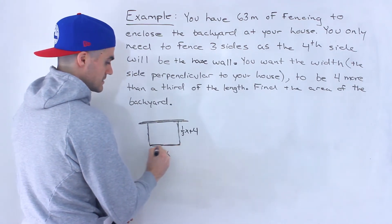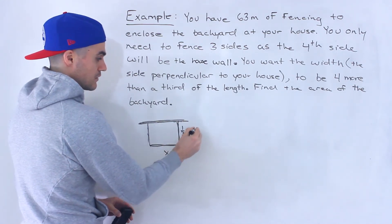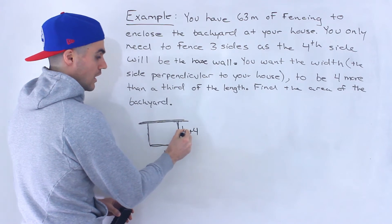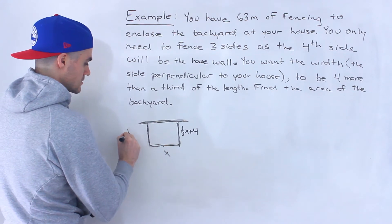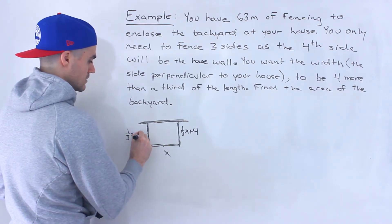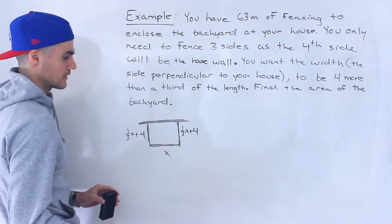Right? If the length is x, then the width is going to be four more than a third of the length. So you've got to read these questions really carefully. So that means this is also going to be one over three x plus four.